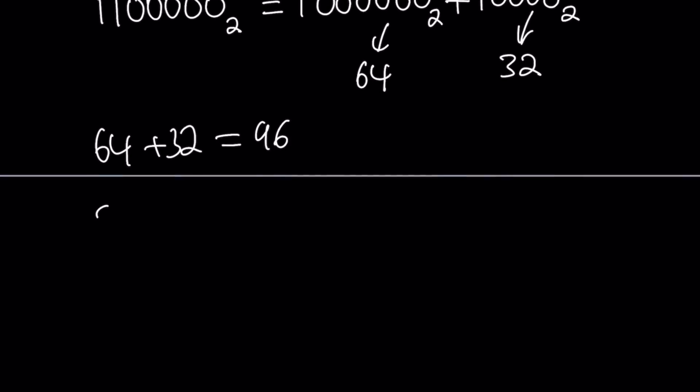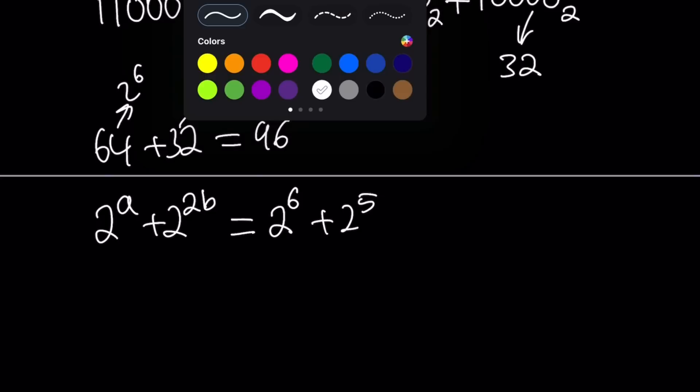Now notice that we can go ahead and write our original equation. 2 to the a plus 2 to the 2b equals 96, which can be written as 2 to the 6 plus 2 to the 5th. 64 is 2 to the 6th power, and this is 2 to the 5th power. And you can tell because 1 is followed by 6 zeros. That indicates 2 to the power 6. So this kind of gives you some ideas. If you do one-to-one correspondence, maybe a is going to be 6. That's a possibility.